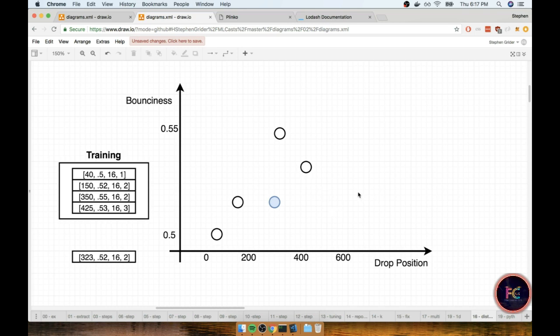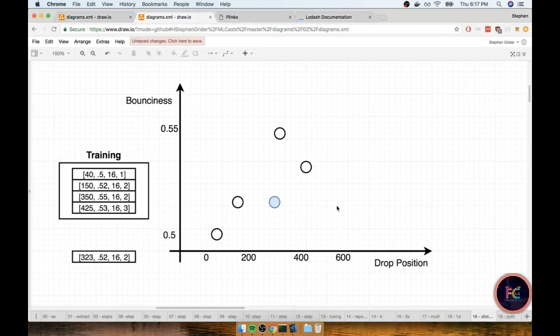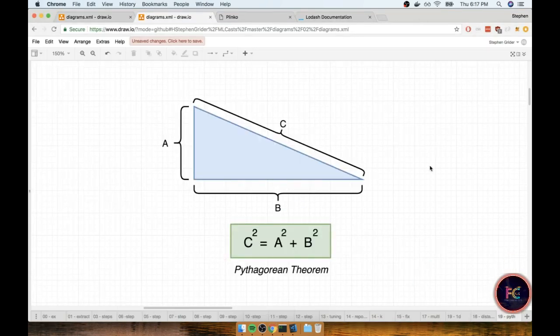Now the last thing we have to really consider is, all right, we understand that we're going to include multiple variables in this comparison or multiple features, but how are we going to actually change this distance formula right here? How are we going to find truly how far or close away one point is from another?